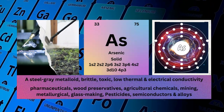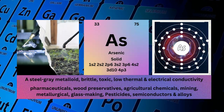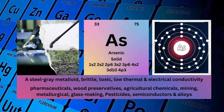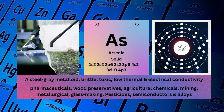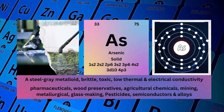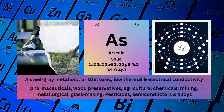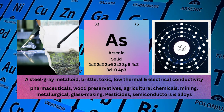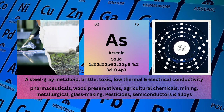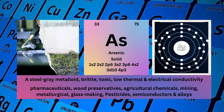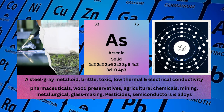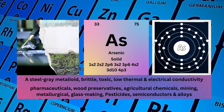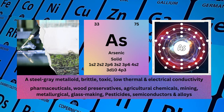Arsenic. Atomic number 33. Mass number 75. Symbol AS. State solid. Electronic configuration 1s2 2s2 2p6 3s2 3p6 4s2 3d10 4p3.